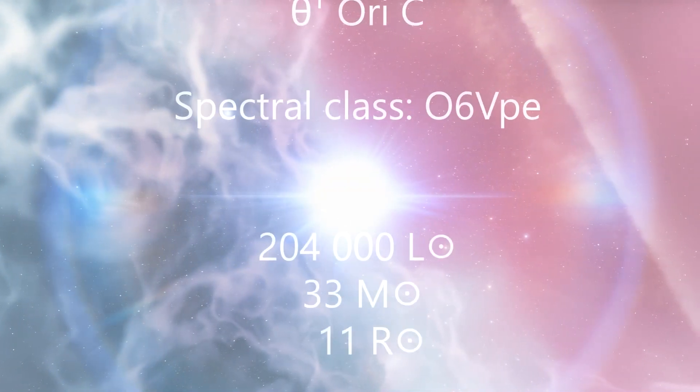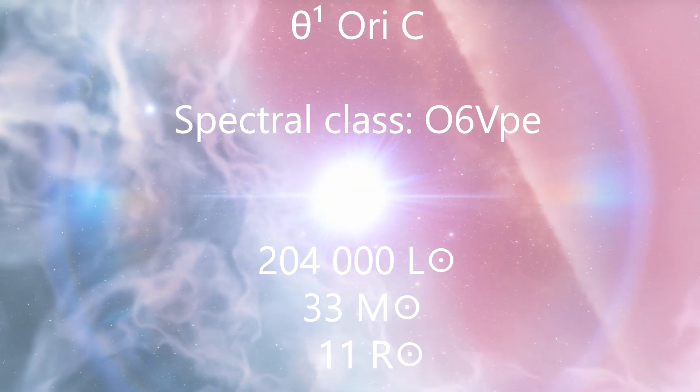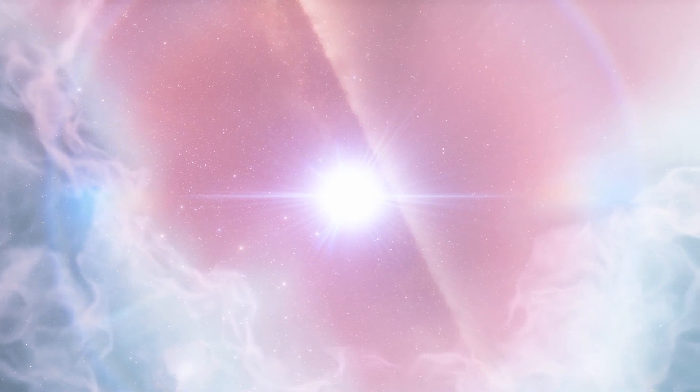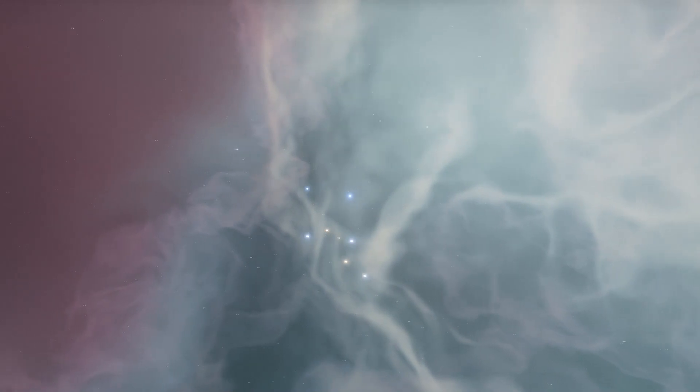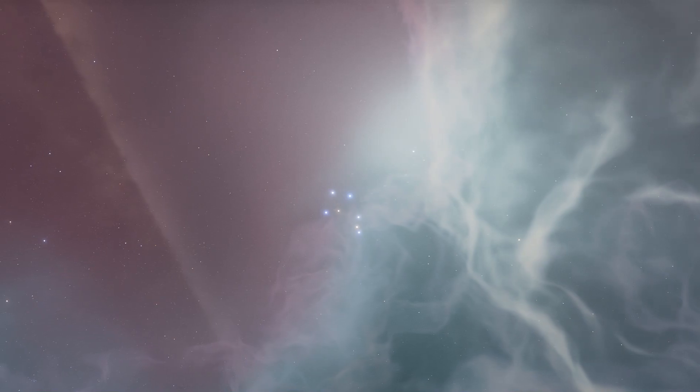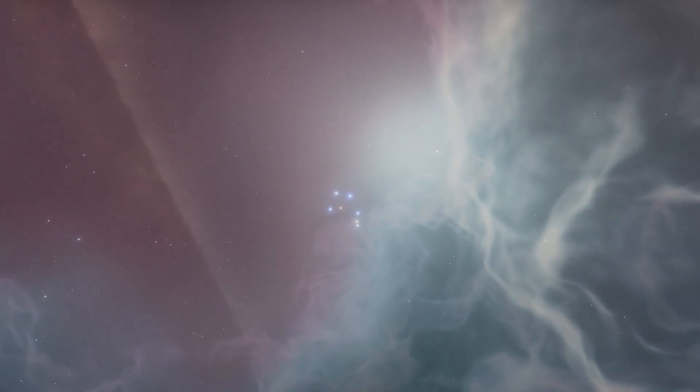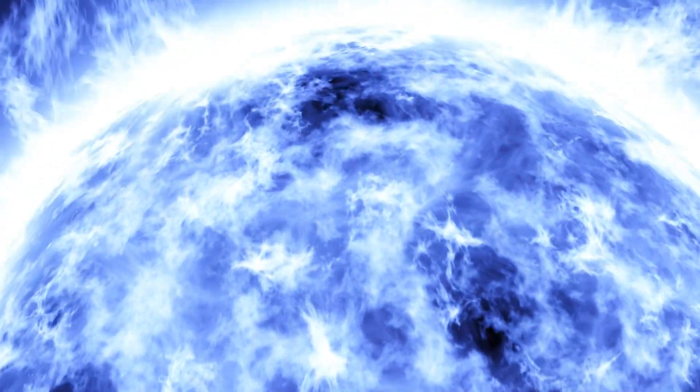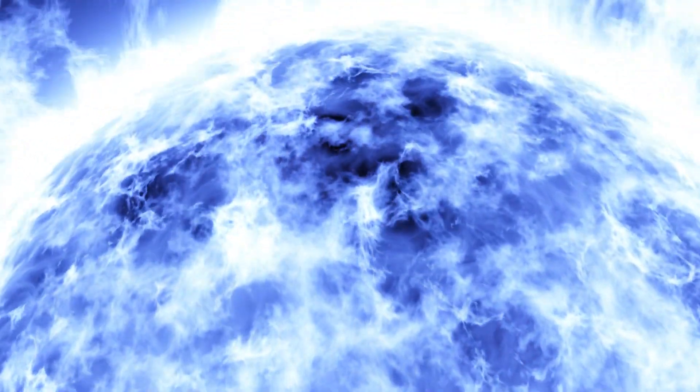From the amazing Achernar system, we are going to another unusual system called Theta-1 Orionis C, a bluish star in the constellation Orion, located 1,500 light years from Earth. The star belongs to the main sequence and has a spectral class of O6V-PE. It is a member of the Trapezium cluster located in the Orion Nebula and the most massive of the 4 bright stars in the center of the cluster. It is the hottest star visible to the naked eye and one of the brightest known stars. It is 33 times heavier than the Sun, 11 times larger and its luminosity is 204,000 solar luminosities.